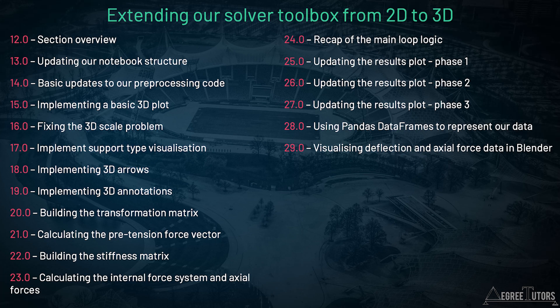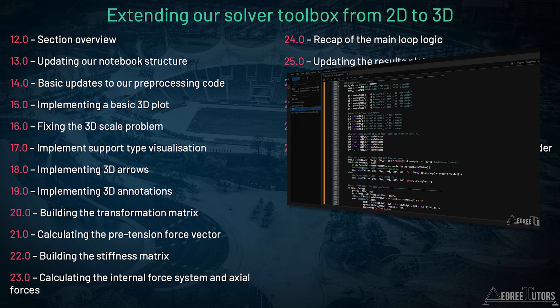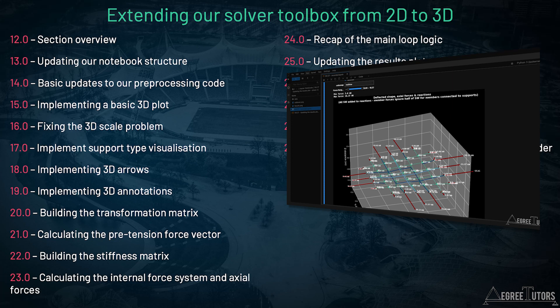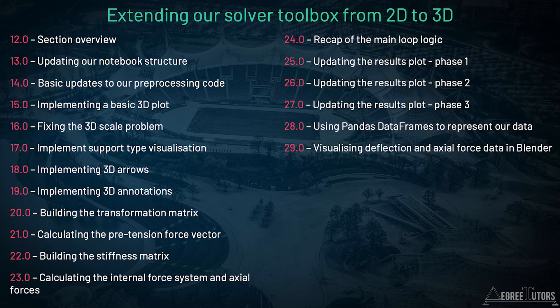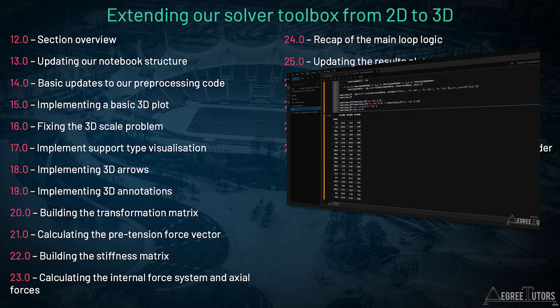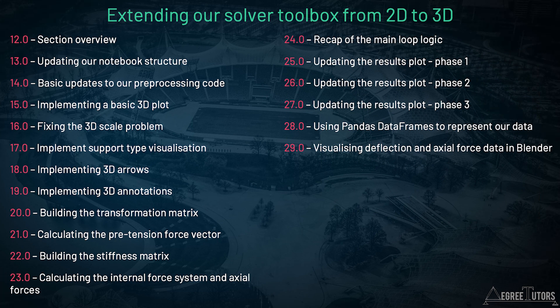We'll finish off this subsection by recapping the main execution loop. Thankfully, we don't actually have to alter any of the code in the main execution loop, as all of the 3D updates are handled in the helper functions. Then we'll move on to updating our main results plot for 3D. A lot of the work will already have been completed earlier in the section, but there will still be quite a few updates to take care of with our results visualization. Finally, we'll introduce a new tool called Pandas that will improve how we visualize and interrogate our tabulated data. By the time we've wrapped up this section, the vast majority of the development work will be complete, and we can start thinking about using our solver to evaluate interesting structures.